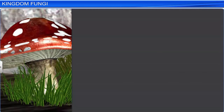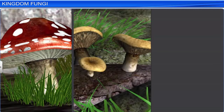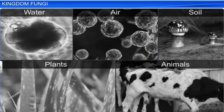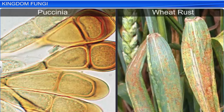Common mushrooms, toadstools, and the mould on leftover bread are all examples of fungi. Fungi can be found everywhere — in water, air, soil, plants, and animals. While there are some fungi like Puccinia that can cause diseases like wheat rust in plants.